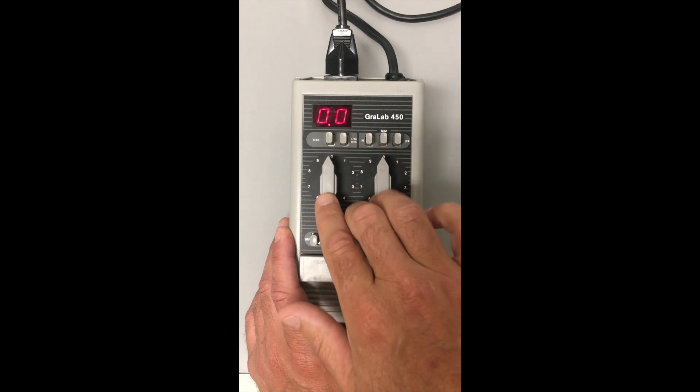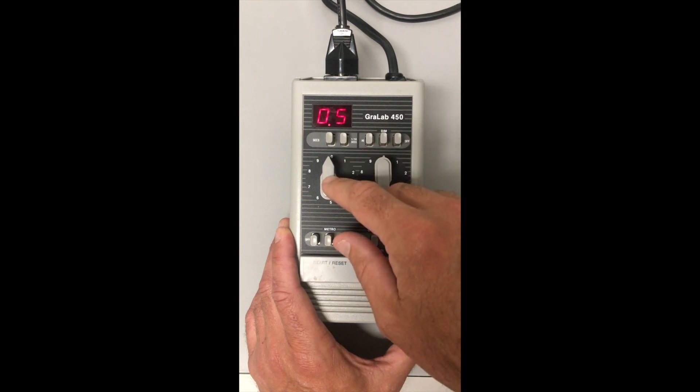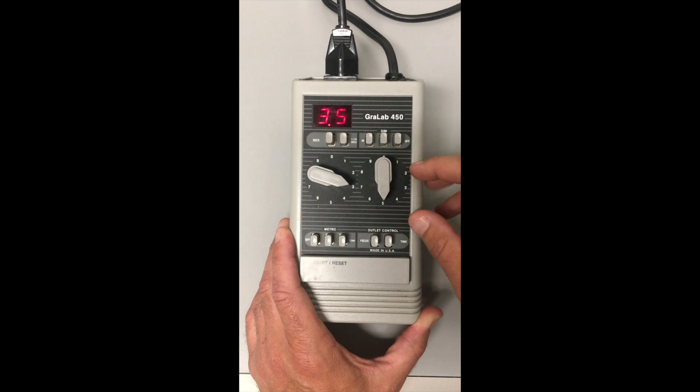So the right hand knob now controls tenths of seconds - that is set for half a second. The left hand knob controls actual seconds, so the enlarger right now is set up to turn on and expose for three and a half seconds.